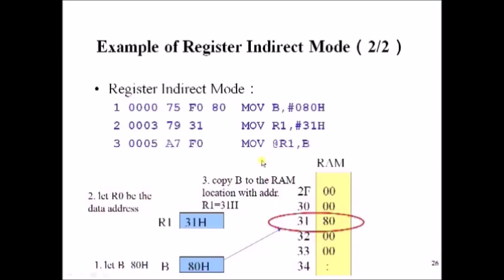Another example: MOV B, #80 stores immediate value 80 in B register. MOV R1, #31 stores 31 as a data value in R1. MOV @R1, B means the value in B (which is 80) should be copied into the address held by R1. Since R1 holds 31, 80H is copied into memory location 31.